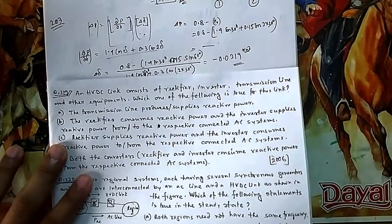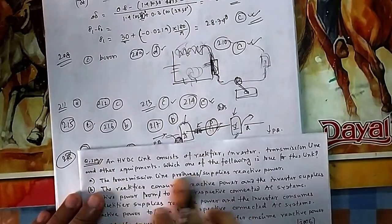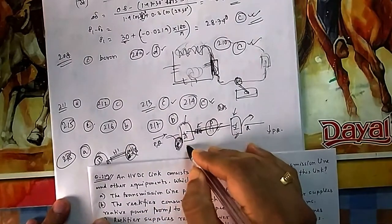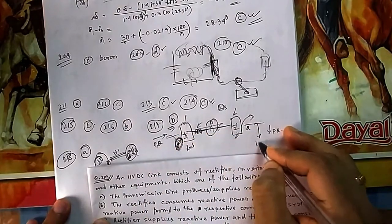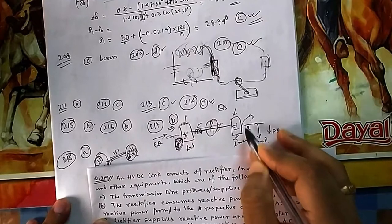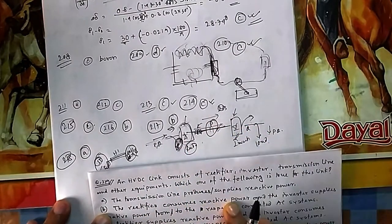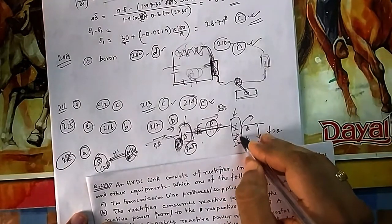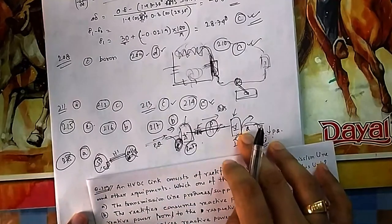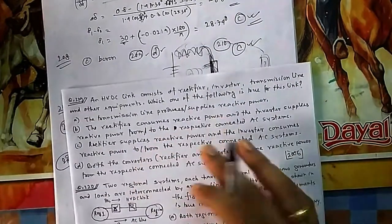Question 219: in an HVDC link consisting of a rectifier, inverter, transmission line, and other equipment — which of the following is true? The transmission line carries no reactive power Q, so option A is wrong. From the AC source, both P and Q are supplied, but only P flows through the DC link. Therefore the rectifier consumes reactive power, and the inverter supplies reactive power to the load on its side. So the answer is option B.